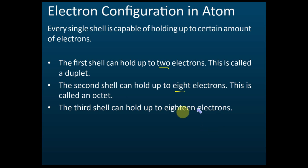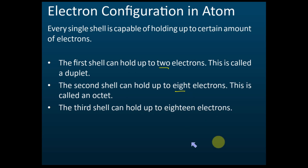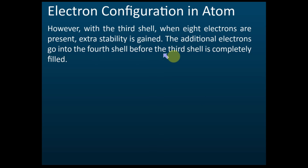We just need to know the first three shells. However, when the third shell has eight electrons present, extra stability is gained. So additional electrons go into the fourth shell before the third shell is completely filled.